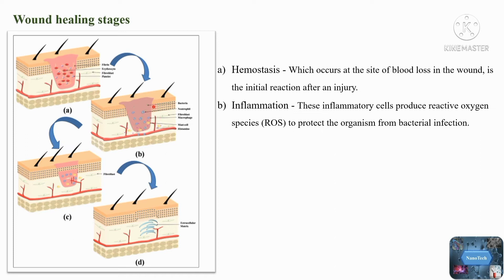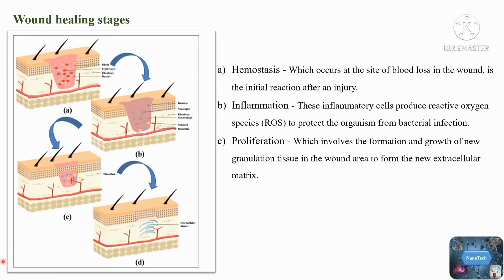These inflammatory cells produce reactive oxygen species to protect the organism from bacterial infection. At this stage, neutrophils and macrophages remove all foreign bodies and tissue debris from the wound bed, preventing infection. The third stage is the proliferation stage, which involves the formation and growth of new granulation tissue in the wound area to form the new extracellular matrix.